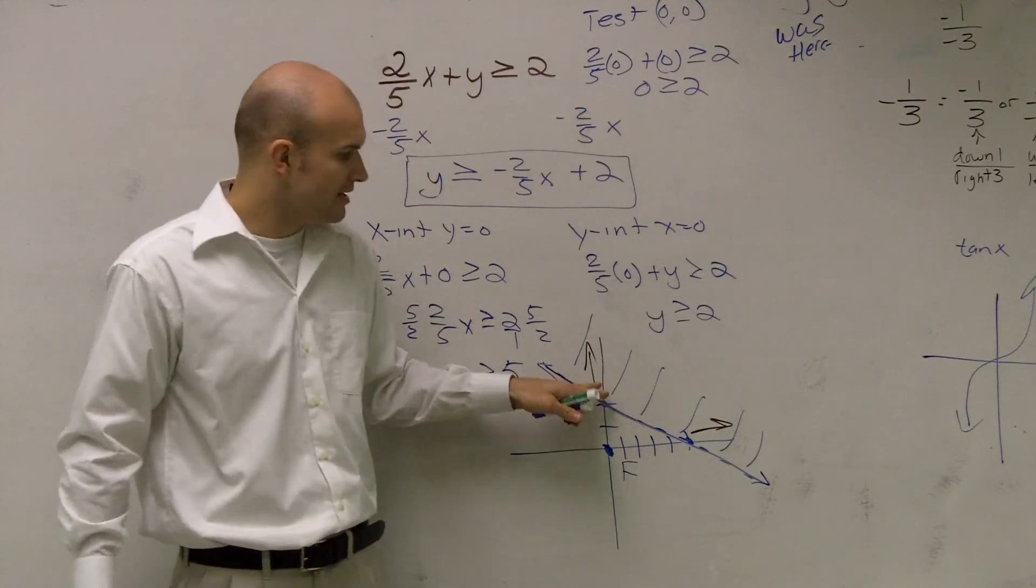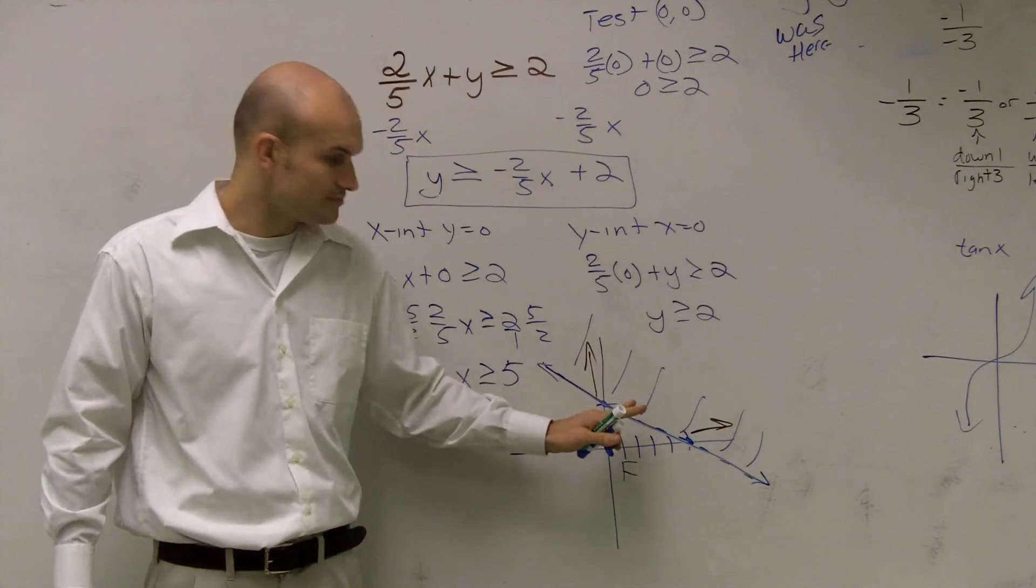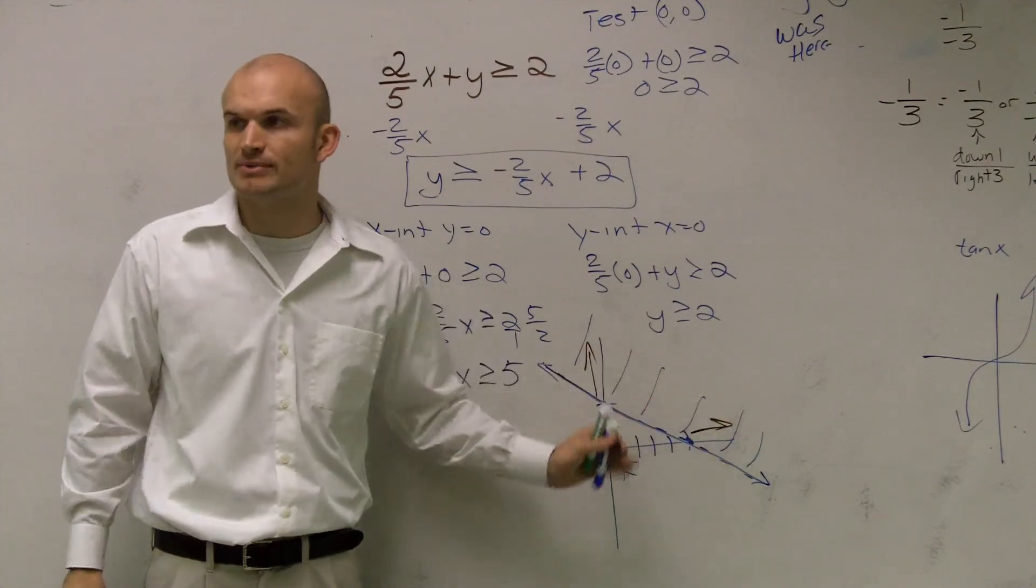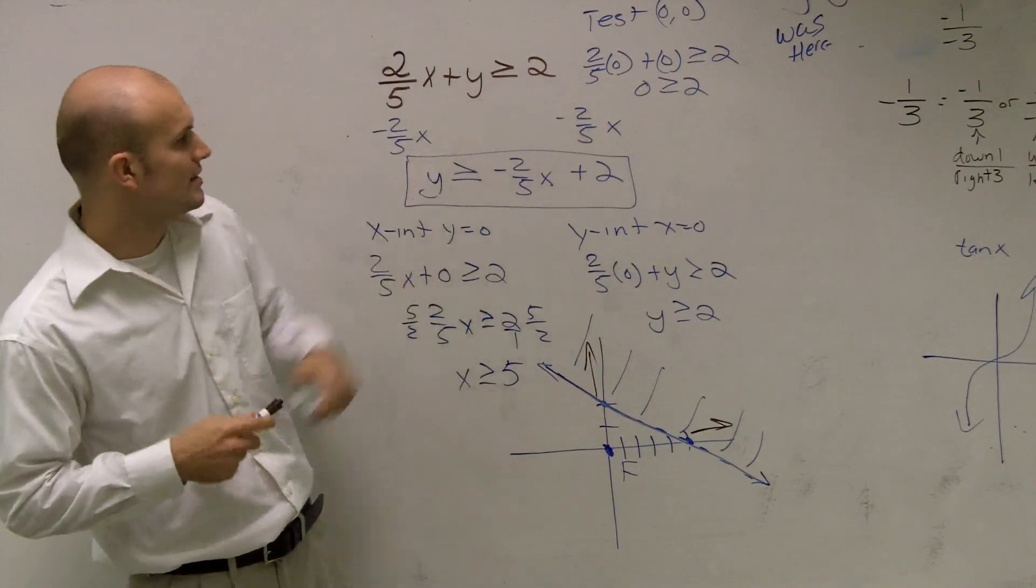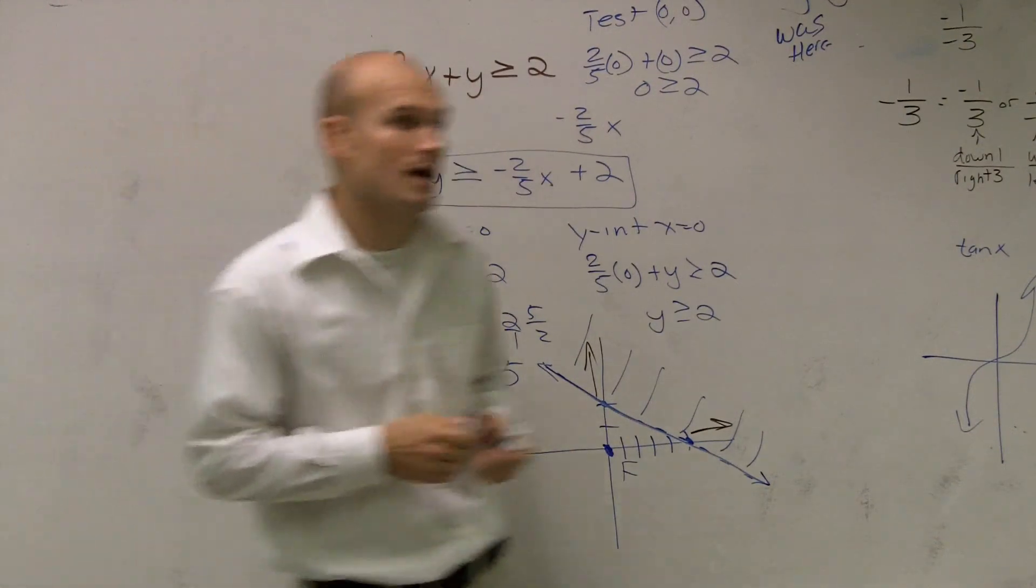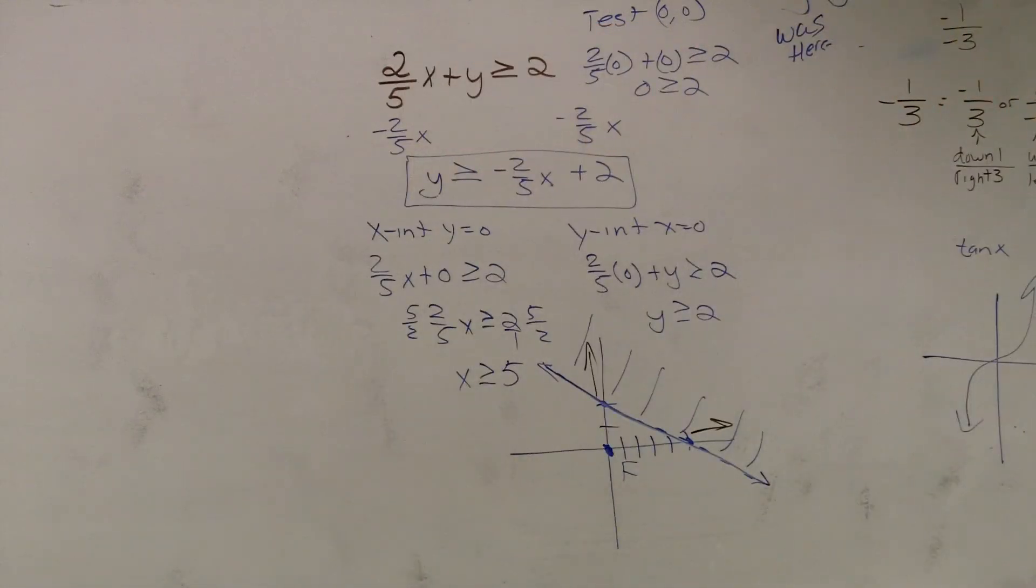So you guys can tell that as long as it's one of these two, you can see where we're going to be shading the graph. Does that make sense? All right? So all right, ladies and gentlemen, that's how you graph when you do not have it solved for y. Okay? Thank you.